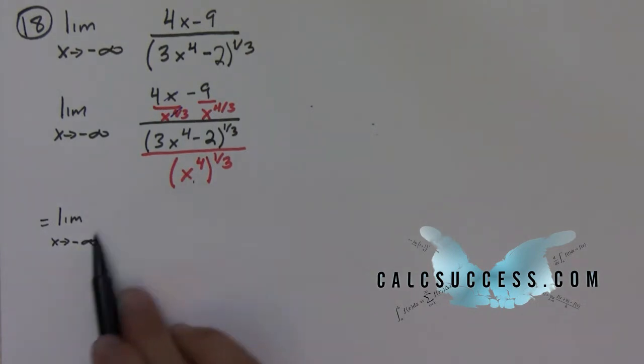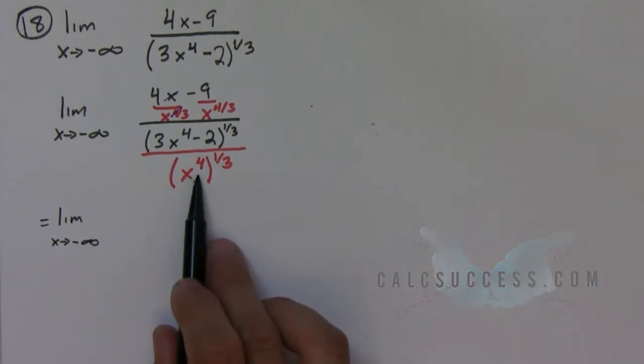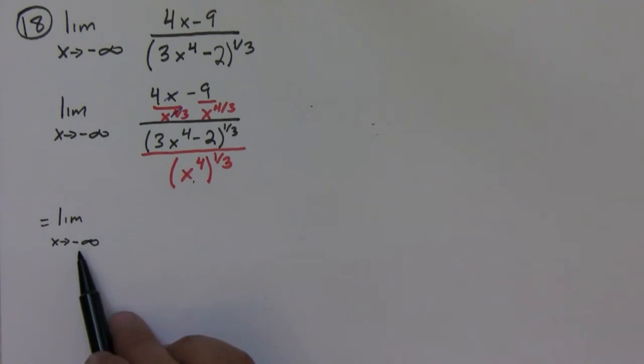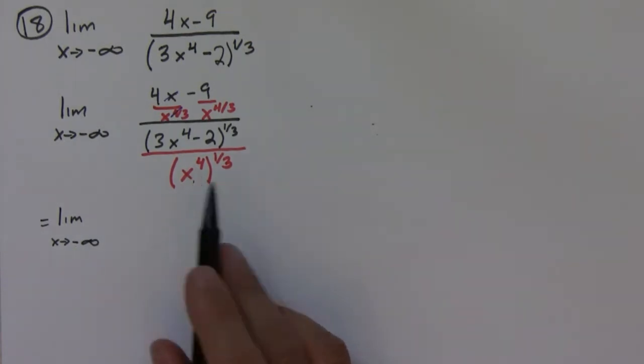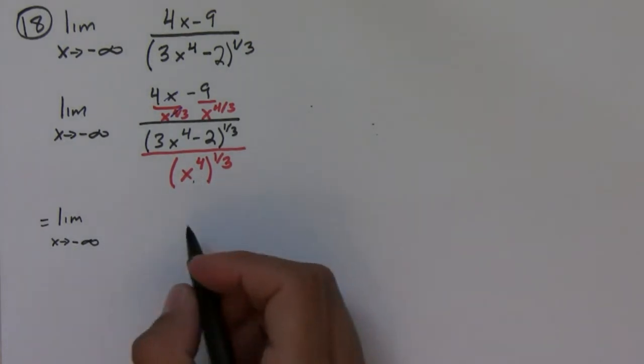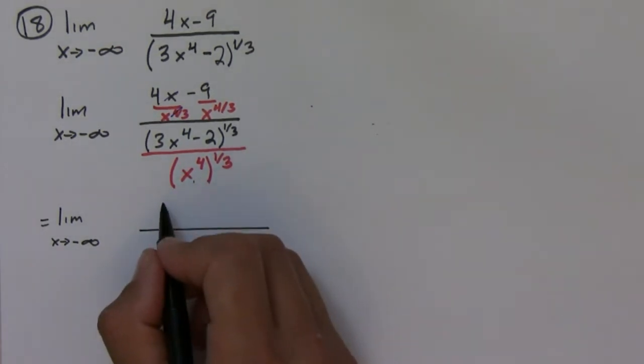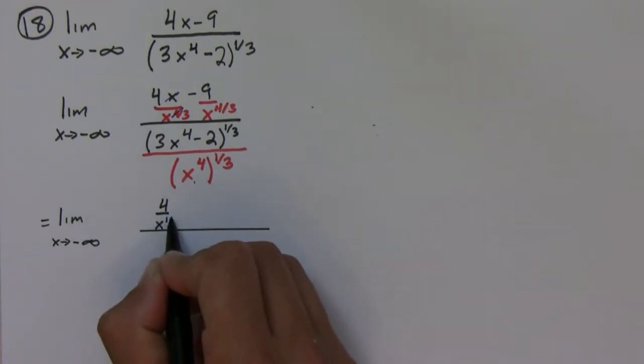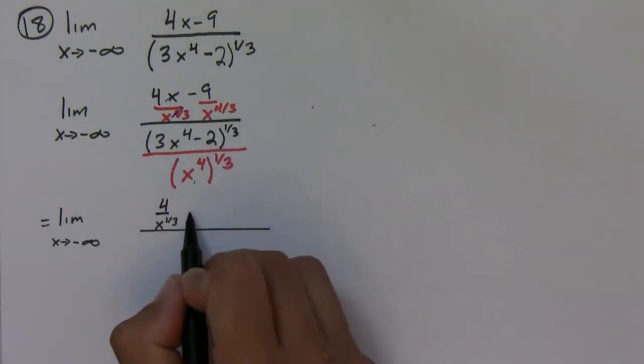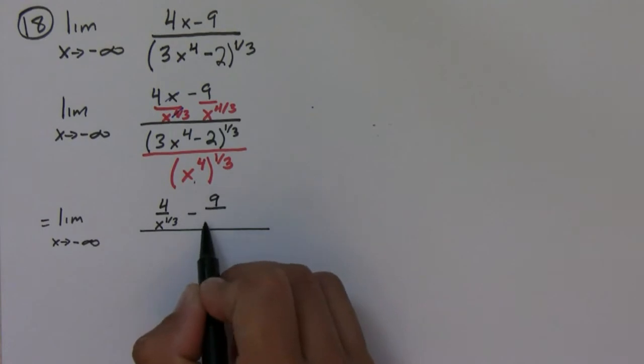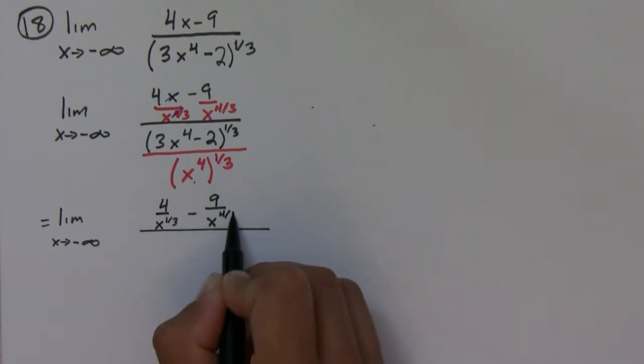Here I have the limit as x goes to negative infinity. Notice that this time the sign doesn't matter because when you raise a negative number to the fourth power it's always going to turn positive. So you don't have to worry about what we had to worry about in the previous two problems. We have four over x to the one-third on top minus nine over x to the four-thirds.